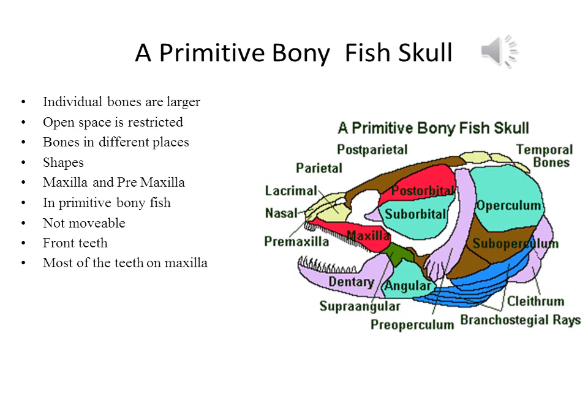As can be seen in the image to the right, in the primitive bone fishes, the individual bones are larger and the amount of open space is restricted. Also, many of the bones are in different places or have different shapes. Look particularly at the maxilla and the premaxilla. In the primitive ray-fin fish, the premaxilla is small, not movable, and carries only a few front teeth. Most of the teeth are on the maxilla itself.